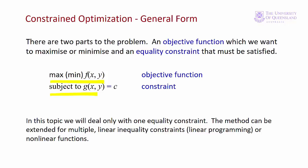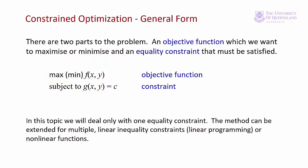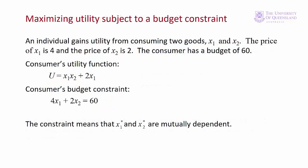The first step in a constrained optimisation problem is to define the objective function and the constraints, and you should always set them out in this form. Note that the constraint here is an equality. We can also have inequality constraints, both linear and non-linear — these types of problems are dealt with in linear and non-linear programming. First let's set up a simple problem, then we'll see how to formulate and solve it as a constrained optimisation problem.